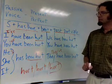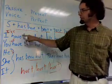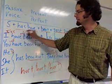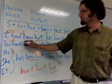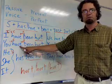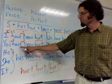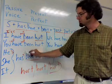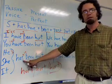To make the negative, you put 'not' after the verb have. I have not been hurt. You have not been hurt. Or you can say, you haven't been hurt. He hasn't been hurt. We can use the contraction: hasn't.